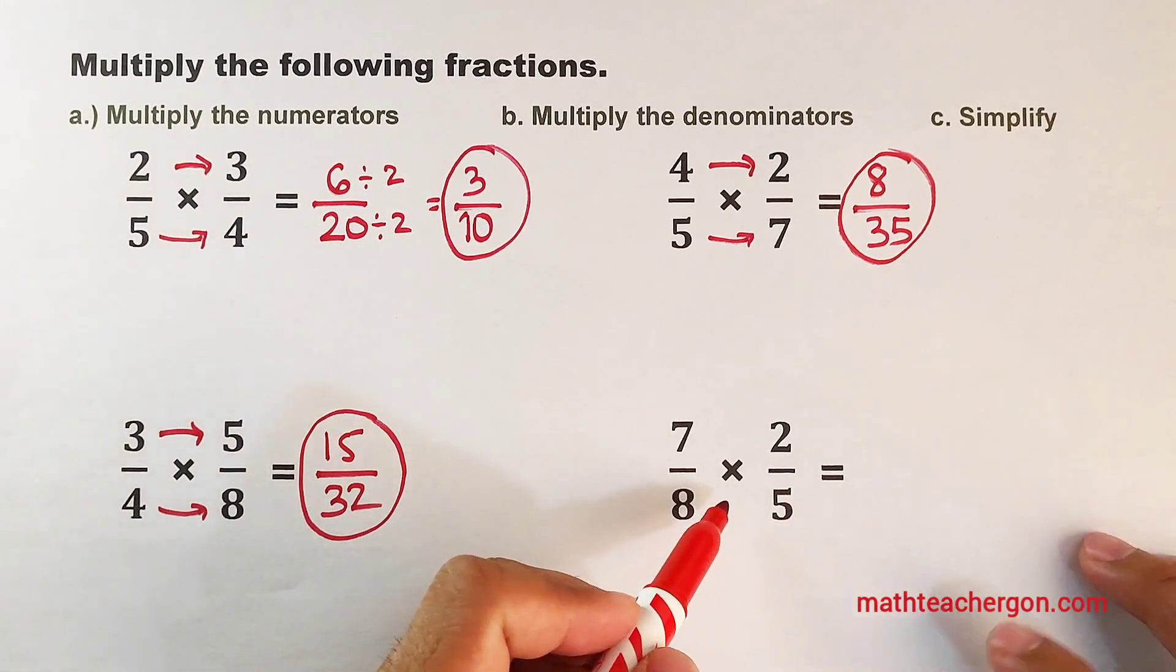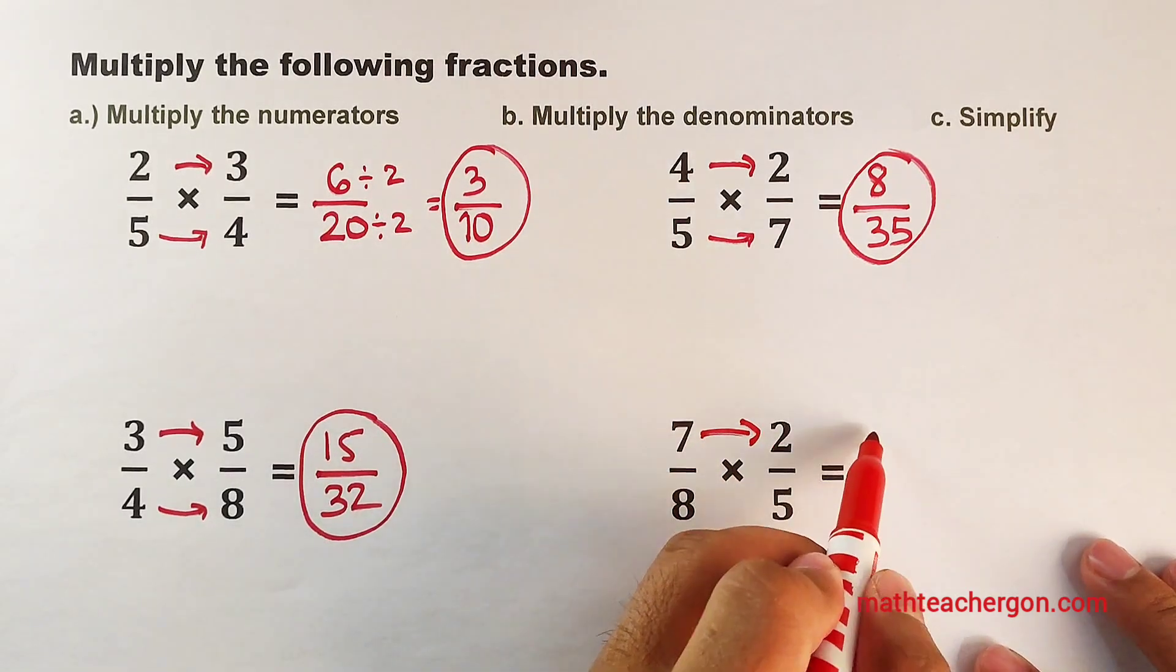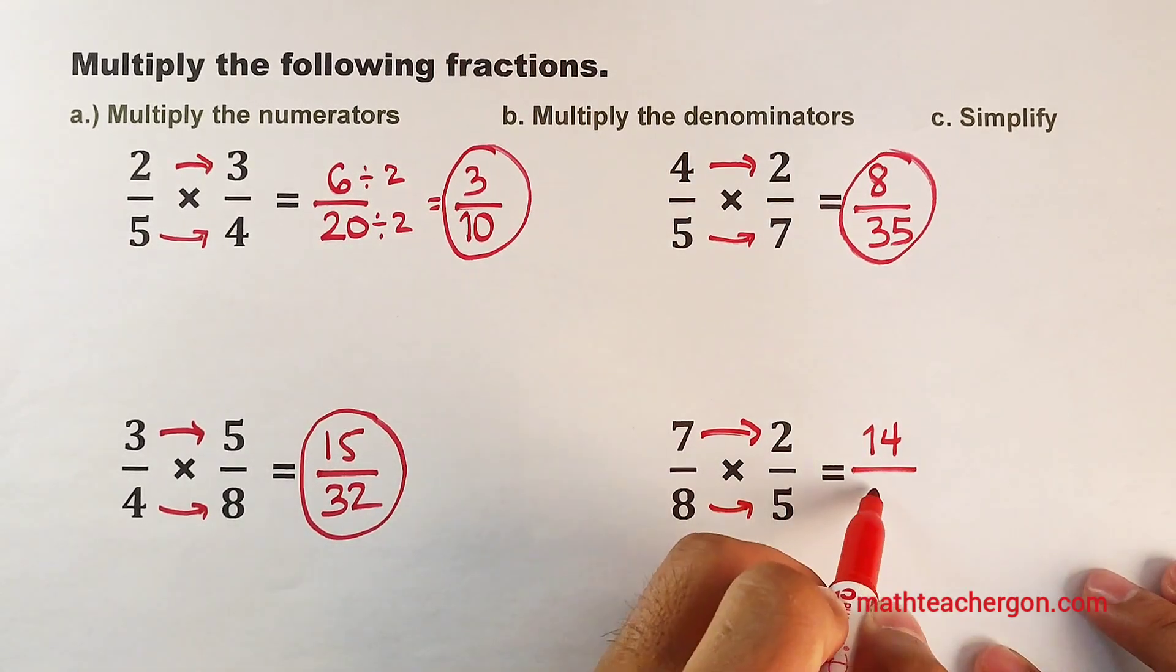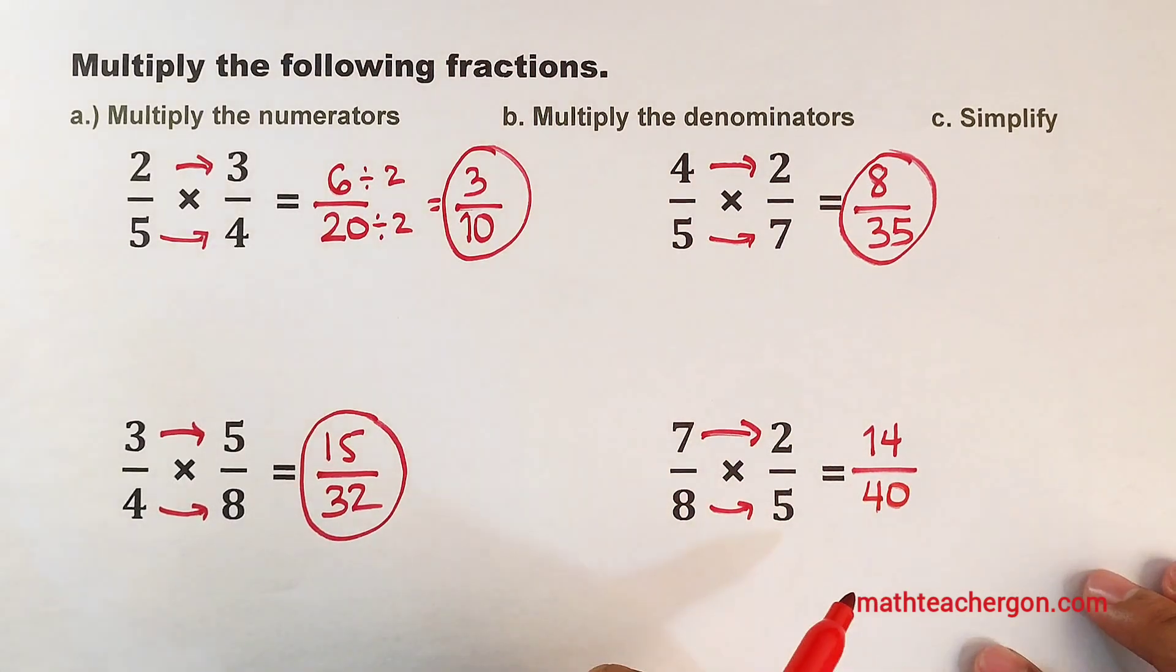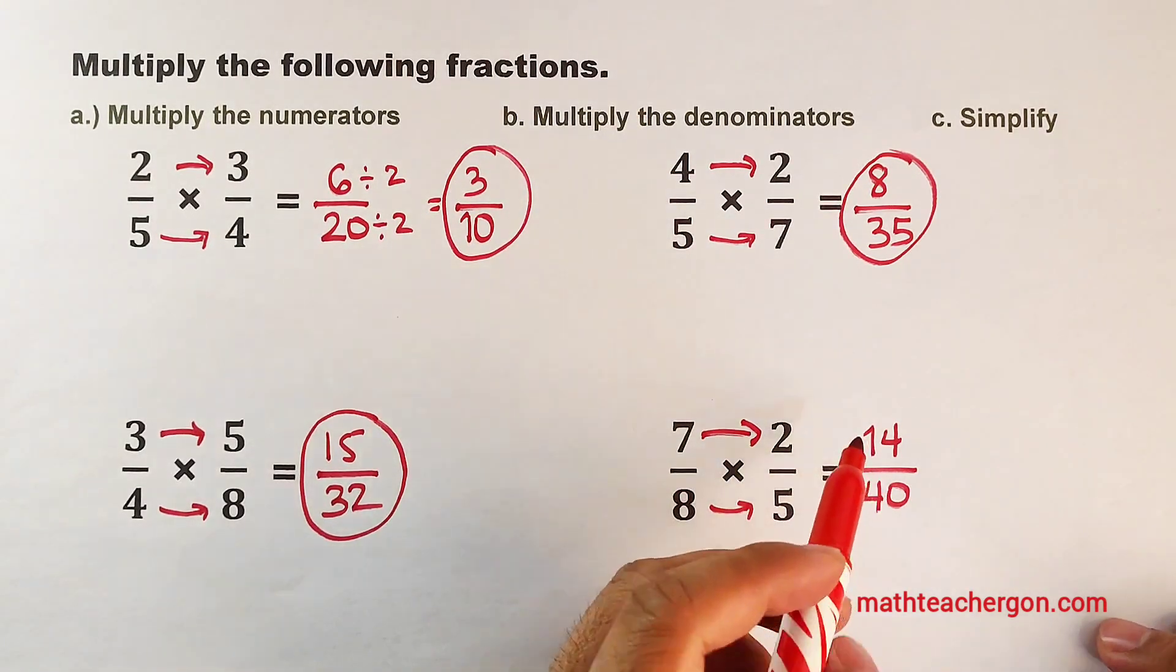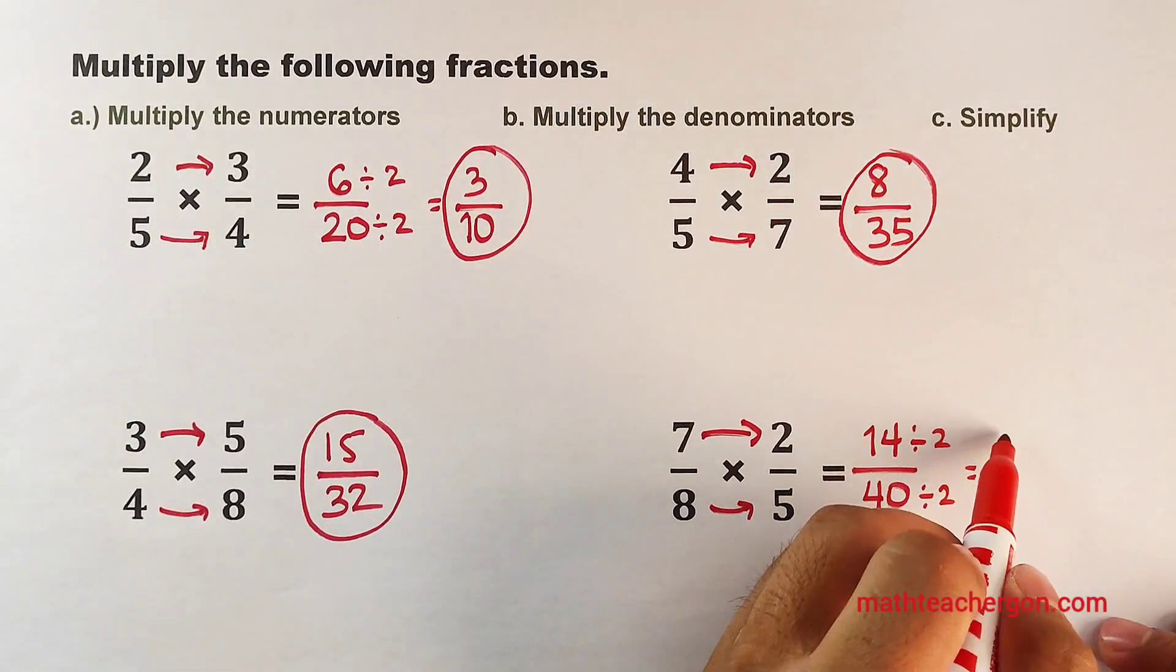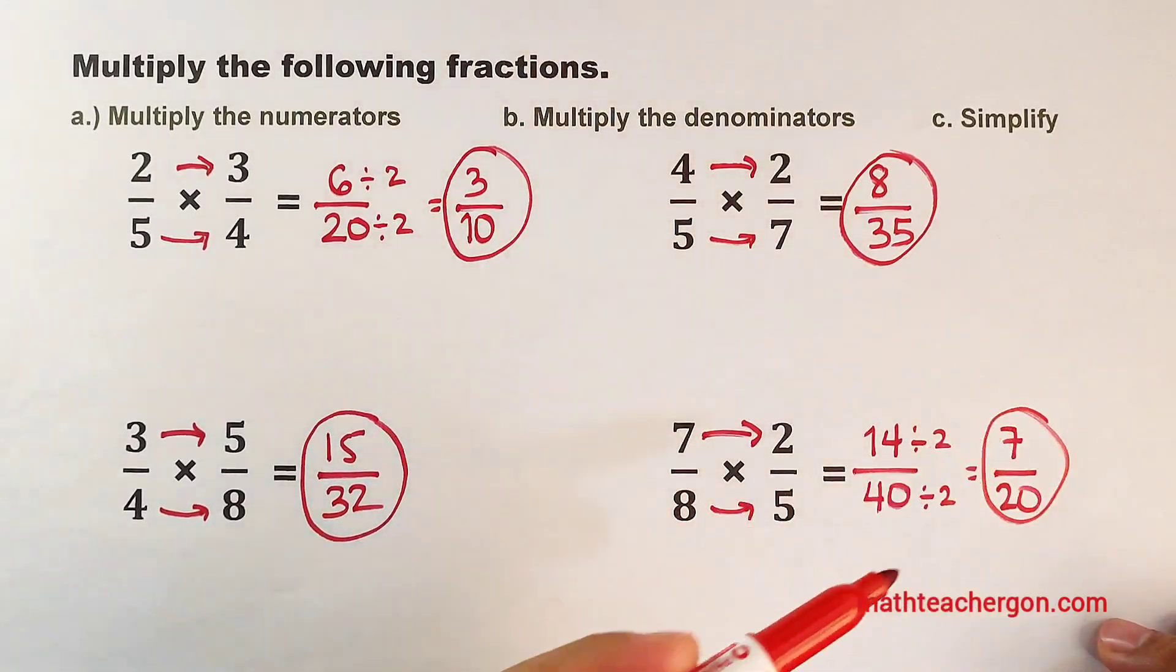Now let's move on with item number 4. 7 over 8 times 2 over 5. Let's do the first step by multiplying 7 and 2. That would be 14 over 8 times 5. That would be equal to 40. Now let's try to simplify or check if 14 over 40 can be simplified. Okay, definitely, since they are both even numbers, we can divide this by 2 and divide this by 2. As you can see, 14 divided by 2 is 7 over 40 divided by 2. That would be equal to 20. And as you can see, this is now the final answer.